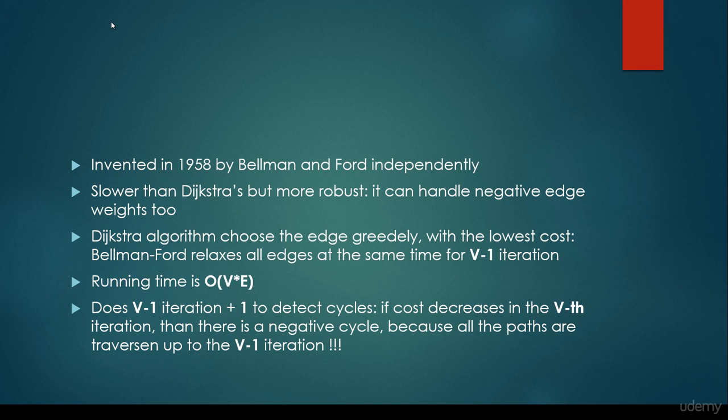Bellman-Ford algorithm does V-1 iterations, plus one more to detect cycles. If the cost decreases in the V-th iteration, then there is a negative cycle, we can know it for sure, because all the paths are traversed up to the V-1 iteration. So we are sure that if we make another iteration, and the total cost decreases, it's sure that there's a negative cycle.